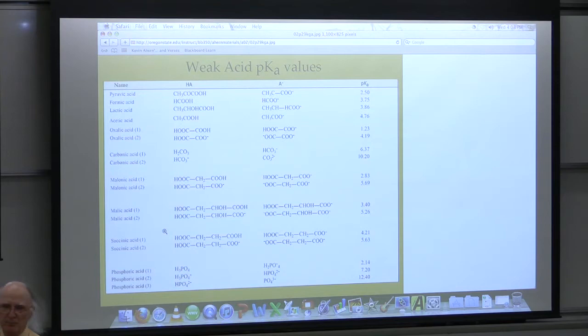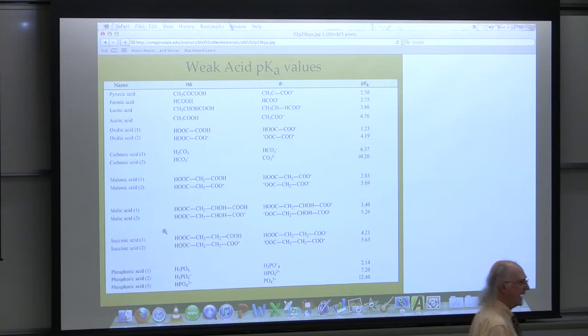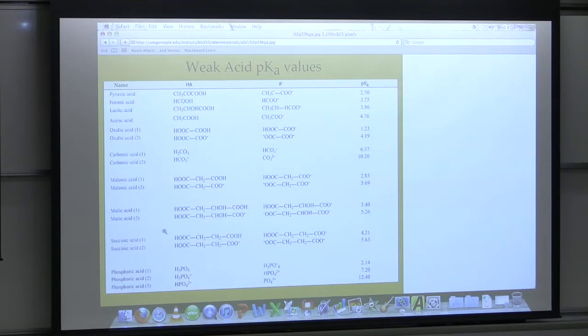People always ask what's the difference between pyruvate and pyruvic acid. Technically, pyruvic acid means it has the proton on, and pyruvate means it's off — but we're just going to call them the same thing. That's true for any '-ic acid': put an '-ate' on the end and it's the same thing. Succinic acid, succinate — same thing. Glutamic acid, glutamate — same thing.